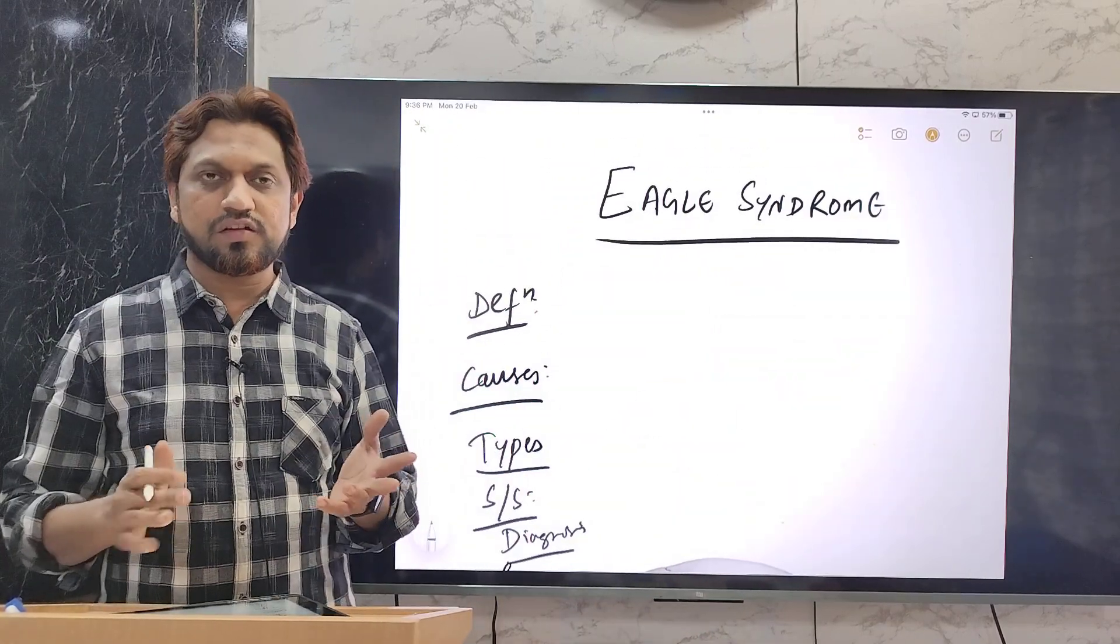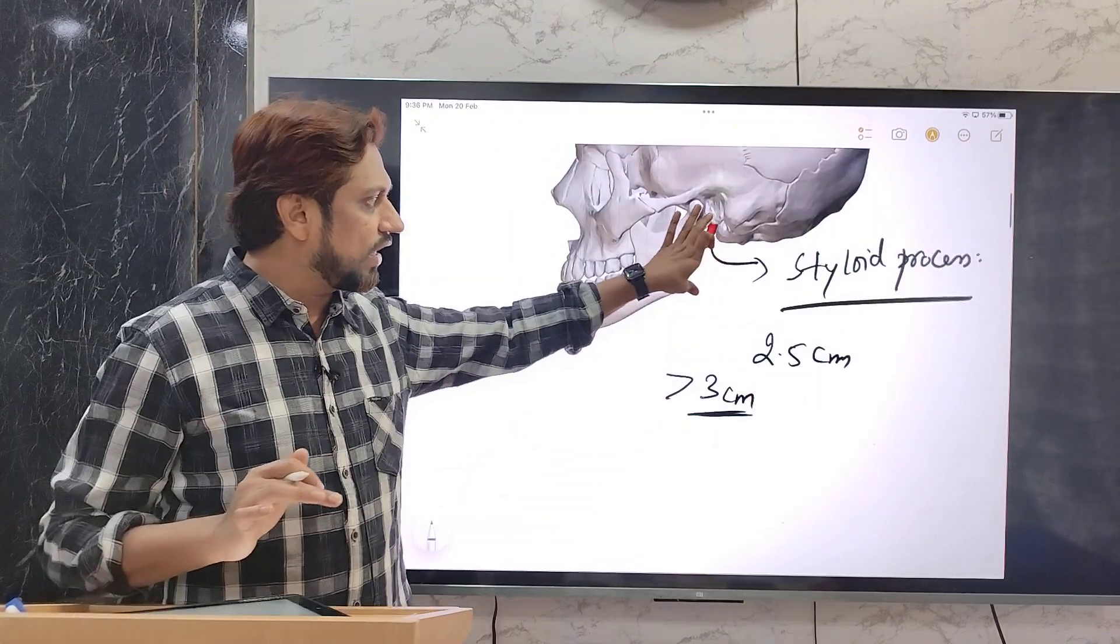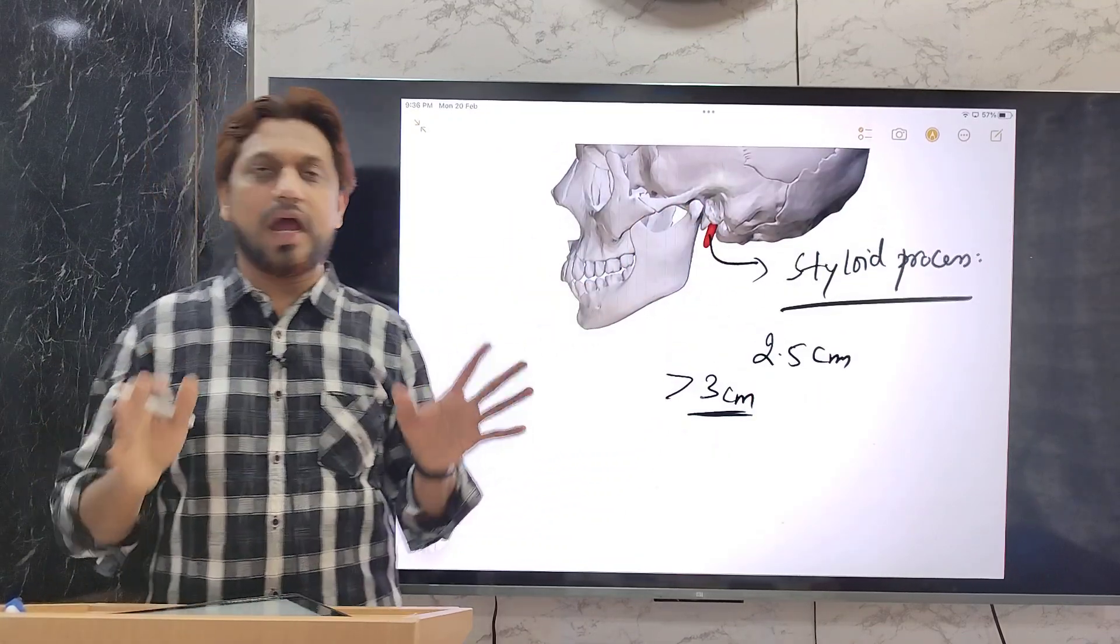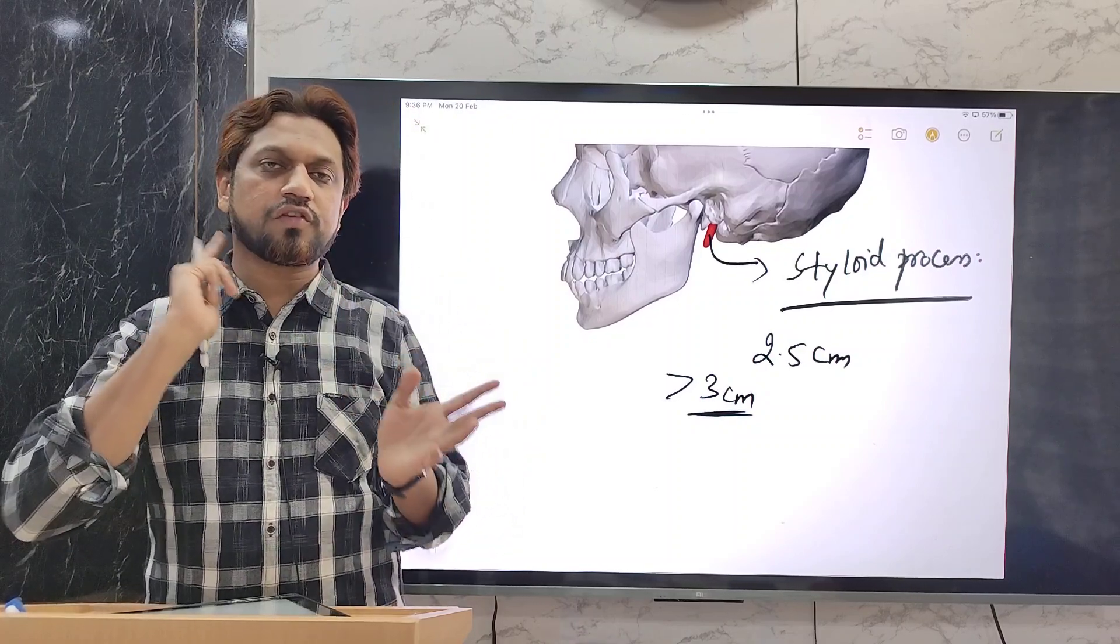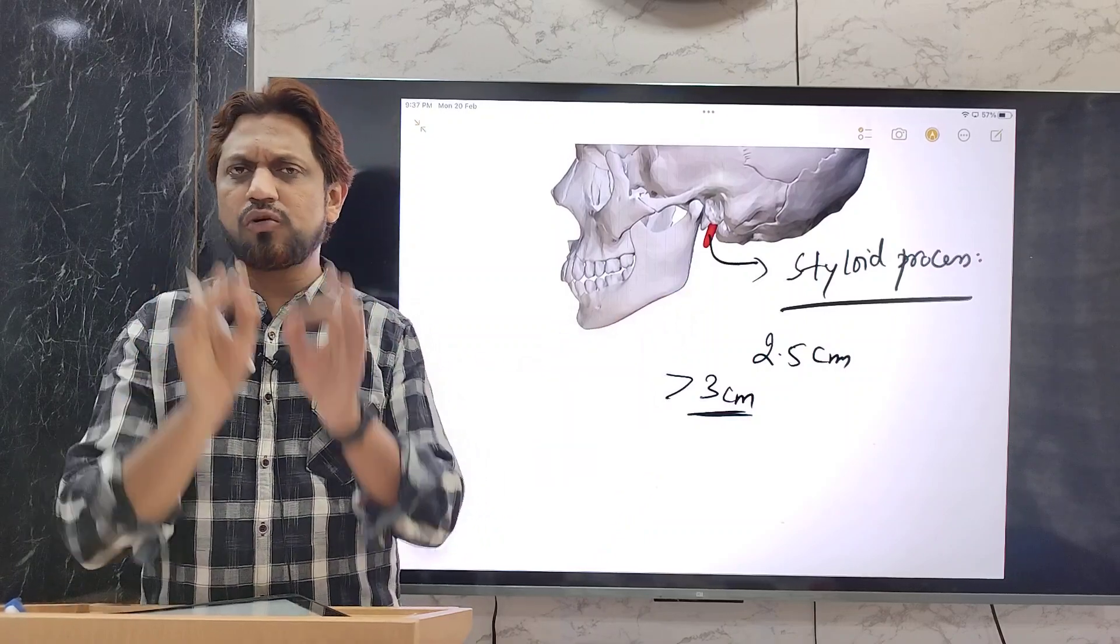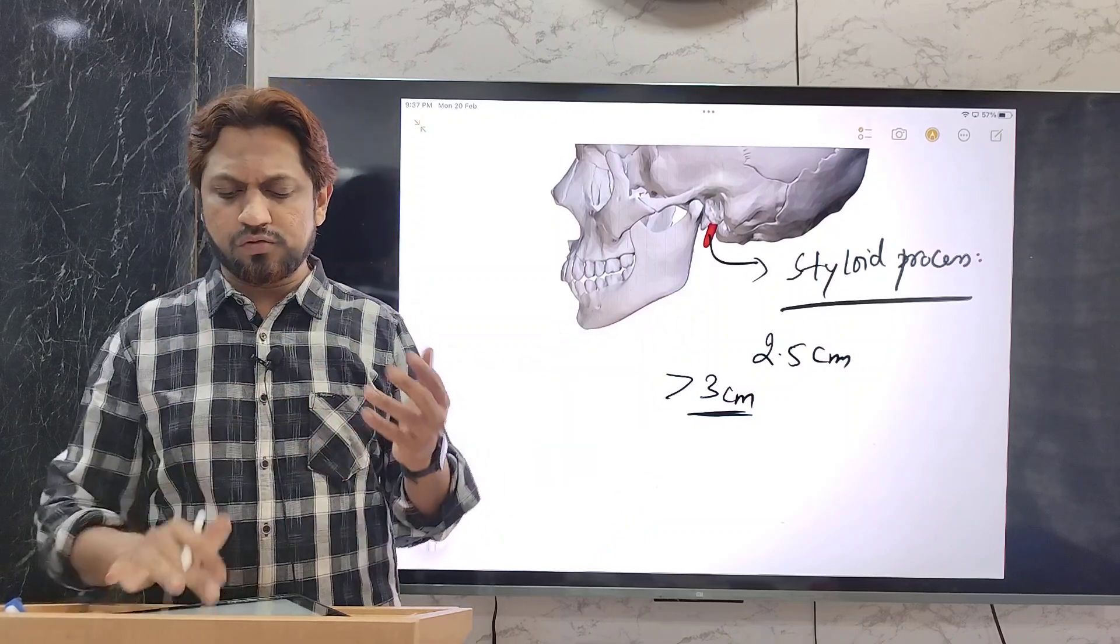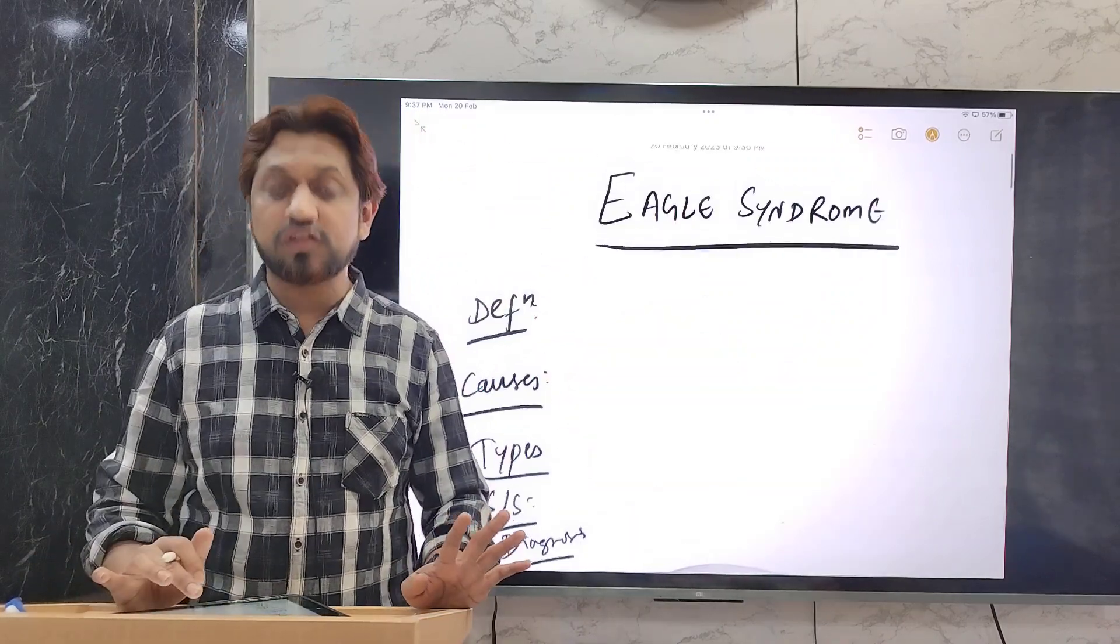What exactly is the Eagle Syndrome? In this Eagle Syndrome, what will happen? This styloid process, the size of this styloid process is increased. And it leads to the compression of the nerves and the vessels or the soft tissue surrounding that styloid process and leads to some signs and symptoms. That group of signs and symptoms is known as Eagle Syndrome due to the enlargement of the styloid process.